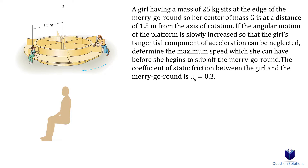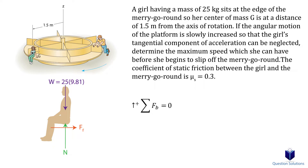When we draw the diagram, we are just looking at the girl. We have the weight, which is mass times the acceleration due to gravity. We have the normal force, which will be equal to the weight in this case. And we have the frictional force, which is the normal force multiplied by the coefficient of static friction. The normal force equals the weight because, for the binormal direction, forces add up to zero — only weight and normal force act on the girl.